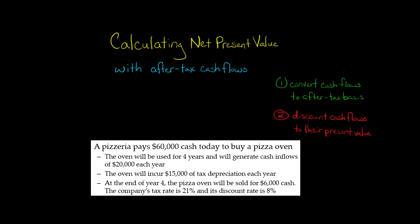In this video, I'm going to show you how to calculate the net present value of a project when taxes are taken into consideration. First, we're going to take all the cash flows of the project and convert them to an after-tax basis using the company's tax rate. Then we're going to discount all the cash flows to their present value, just like you would with a normal NPV problem.